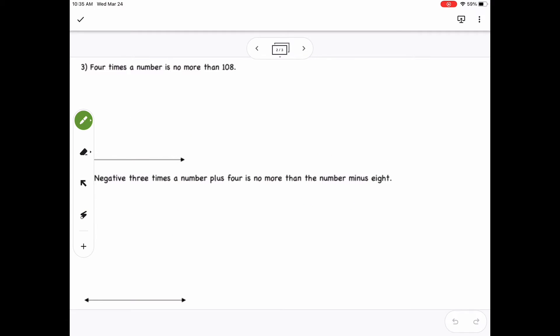Moving on to number 3, here, 4 times a number is no more than 108. So 4 would be 4, times would be multiplication. A number would be x. Is no more than is one of our words for less than or equal to. So we'll have a less than or equal to sign there, and then 108 is obviously 108. Okay, so then my equation will be 4x less than or equal to 108.